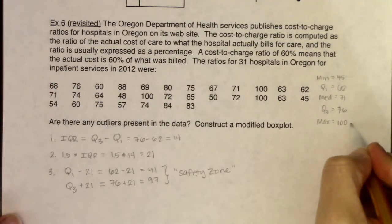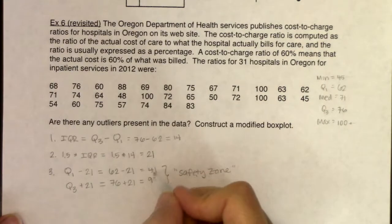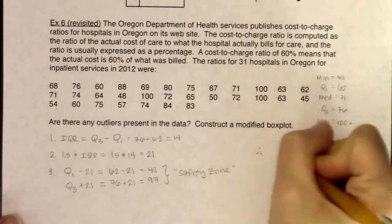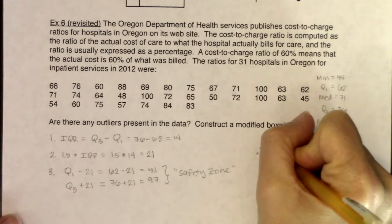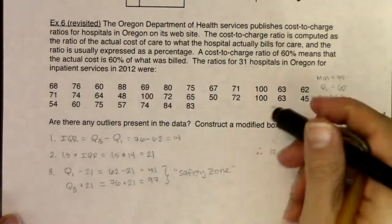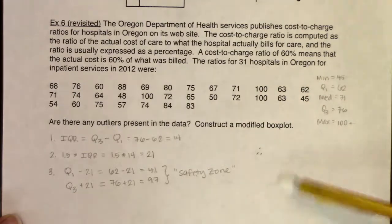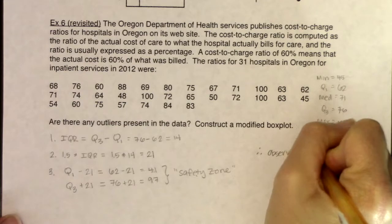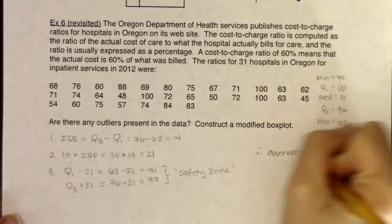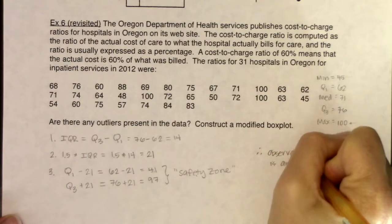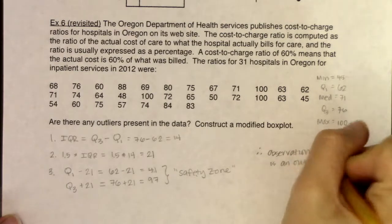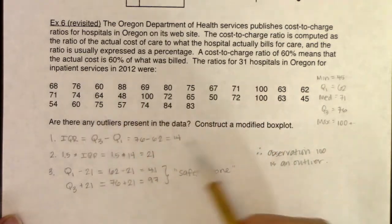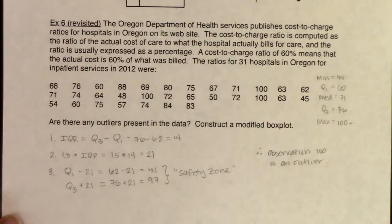Let's go to the max. The max is 100 — is 100 safe? No, it's not. So we have at least one outlier. Therefore, observation 100 is an outlier. And since it's a max, I have to look for the next largest data value because there may be more than one outlier.